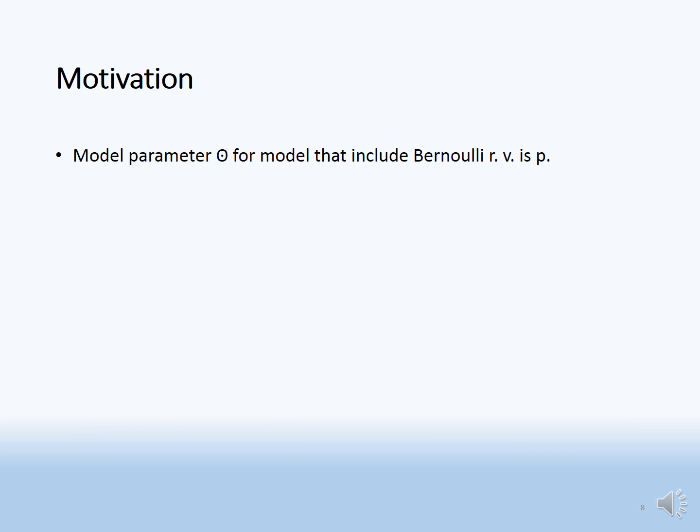Motivation: the model parameter theta for a model that includes a Bernoulli random variable is p. Let x be a collection of Bernoulli random variables, for example: 1, 0, 0, 1, 1, 0, 1.